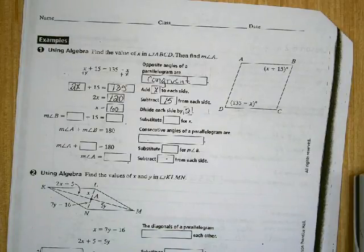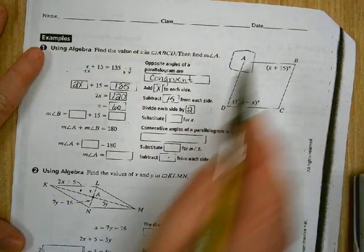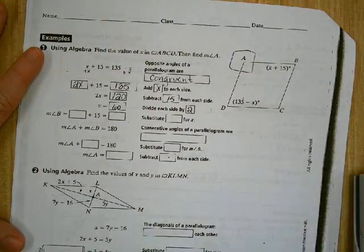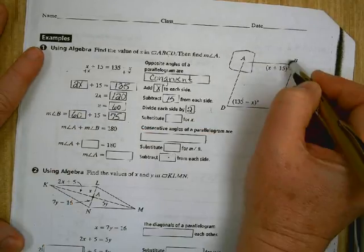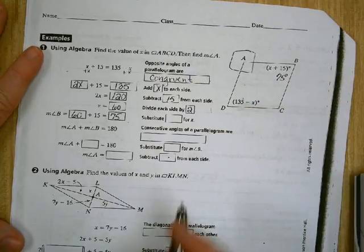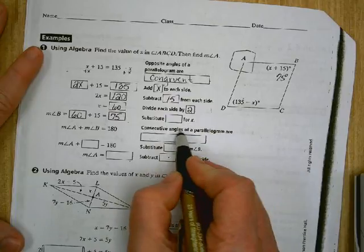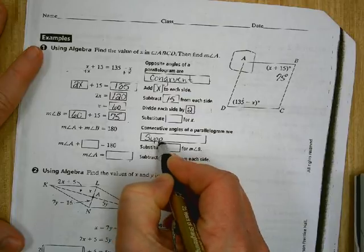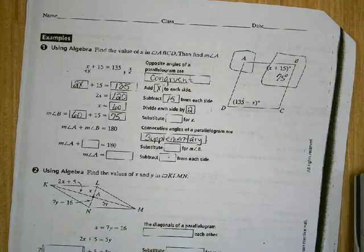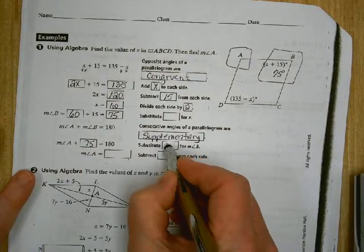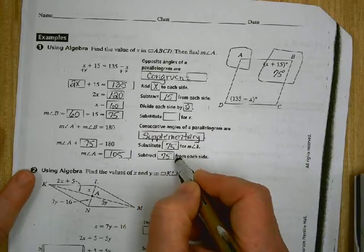Now, we have to find the measure of angle A. Well, in order to do that, we're going to have to find the measure of angle B. The measure of angle B is 60 plus 15, which is 75. So this angle is 75 degrees. Now, we learned on Friday that consecutive angles of a parallelogram are supplementary. A and B are consecutive angles, which means that they are supplementary. What's the word supplementary mean? So 75 plus what is going to give me 180? Subtract 75 from each side. Measure of angle A is 105.